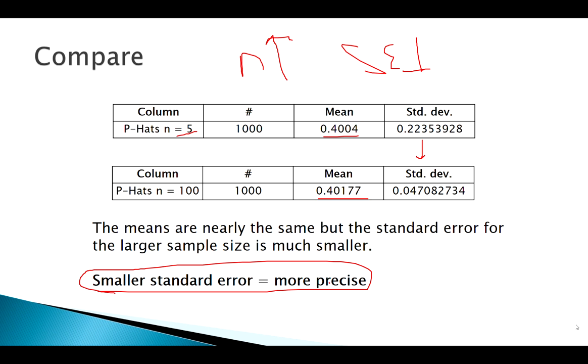The smaller standard error is more precise estimates. So in other words, as n goes up, the standard error goes down, more precise estimates. The larger samples give us more precise estimates.